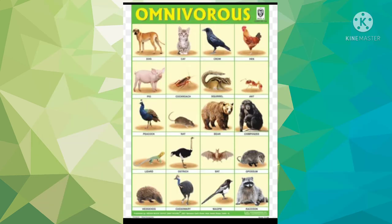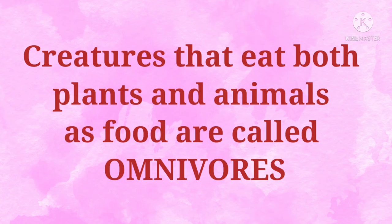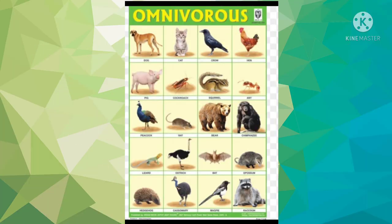The third category is omnivores. Creatures that eat both plants and animals as food are called omnivores. Examples of omnivores are dogs, birds, etc.